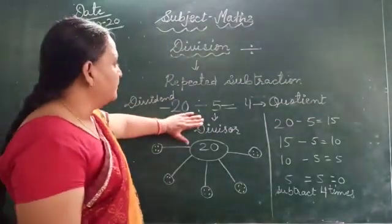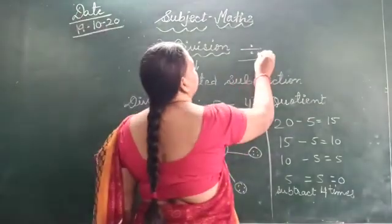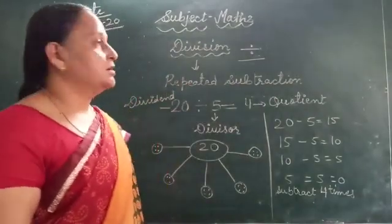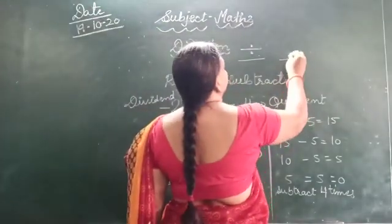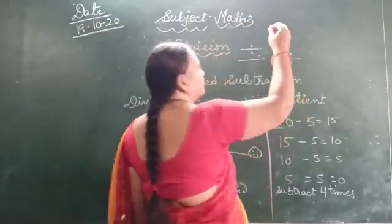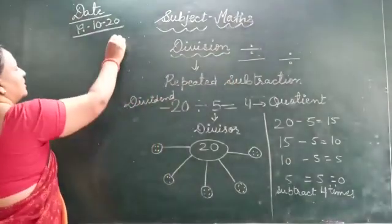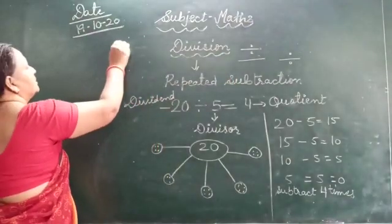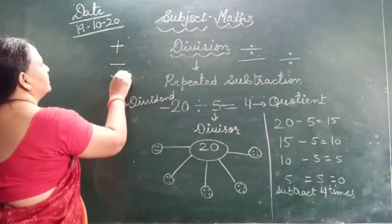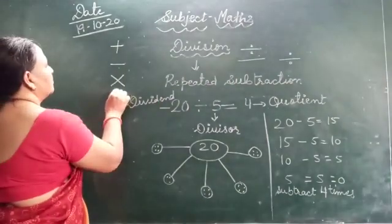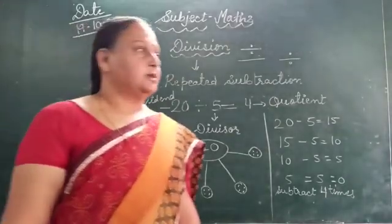Take a look — we have written 20, we have our division sign. This is the addition sign, this is the subtraction sign, this is the multiplication sign, and this is the division sign.